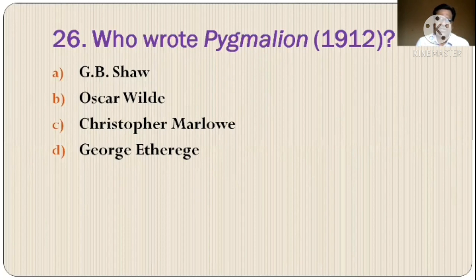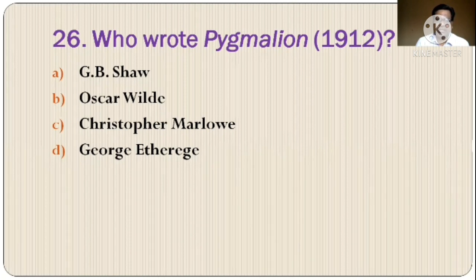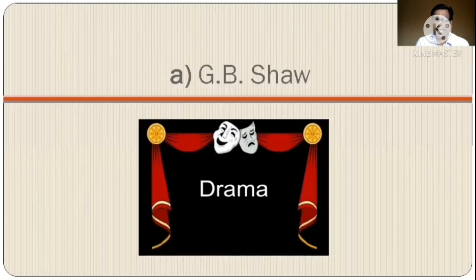Question 26: The options are: A) G.B. Shaw, B) Oscar Wilde, C) Christopher Marlowe, D) George Atherch. The correct option is option A, G.B. Shaw.